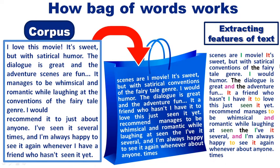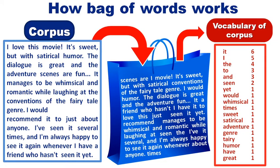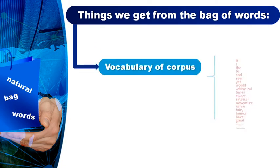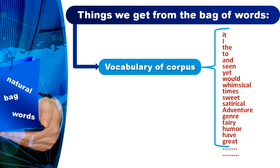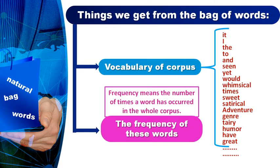After getting the vocabulary of corpus, what information do we receive from this NLP model known as bag of words? We receive two things: number one, vocabulary of corpus — meaning all the unique words available in the corpus — and second, the frequency of these words. Frequency means the number of times a word has occurred in the whole corpus. This frequency will be counted and listed in the dictionary.